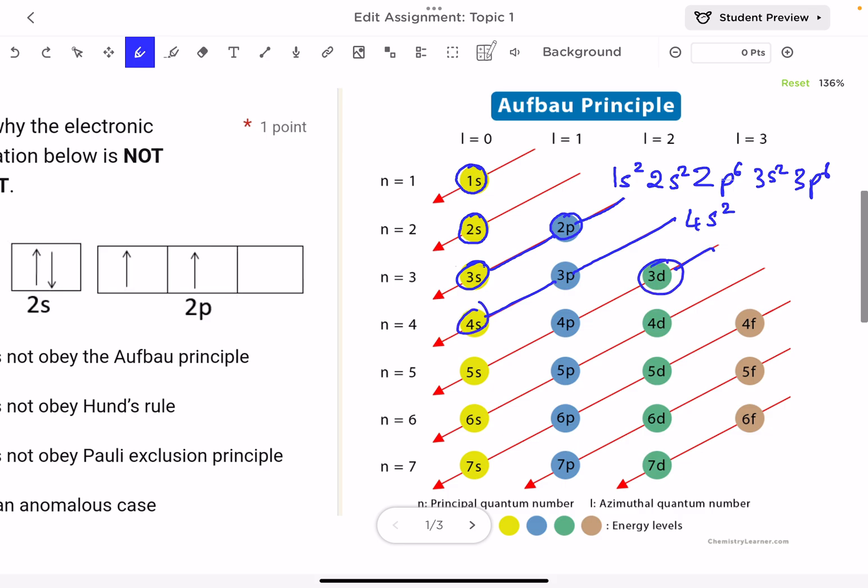So after 4s2 comes the 3d10. Let's say we have a total of 33 electrons. Where do we stop? We start filling the orbitals and counting. 2 plus 2 equals 4, plus 6 equals 10, 12 plus 6 equals 18, plus 2 equals 20, plus 10 equals 30. So I filled now 30 electrons. I still need to fill three more electrons.